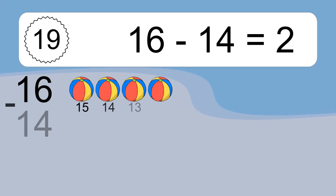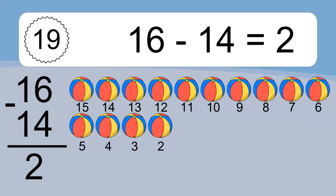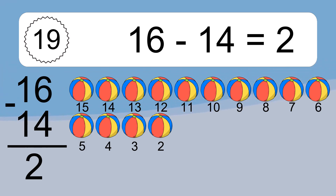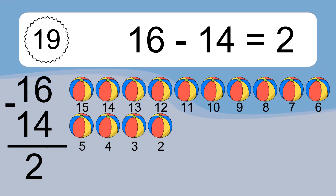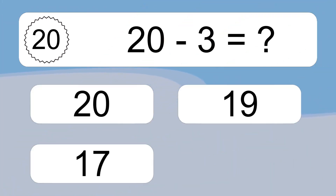16 minus 14 equals what? 16 minus 14 equals 2. Let's count it. 15, 14, 13, 12, 11, 10, 9, 8, 7, 6, 5, 4, 3, 2.